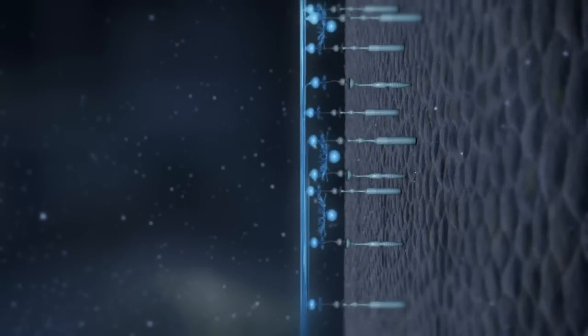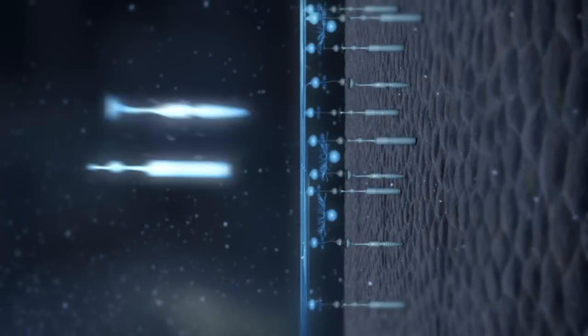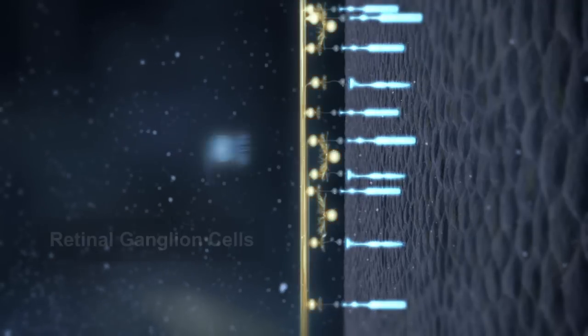The NEI Audacious Goals Initiative will target two particular neuronal cell types in the retina: photoreceptors and retinal ganglion cells.